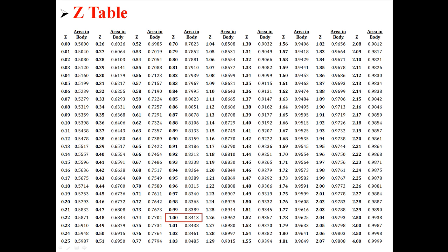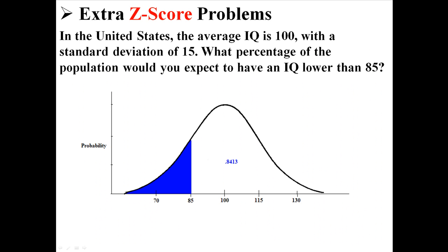But basically what I'm going to do is look up the z of 1, and when I look up the z of 1, I find out that the area in the body is 0.8413, which is about 84%. So what that means is the area in the body is 0.8413.